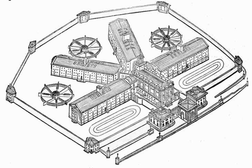In sociology, conflict theory states that society or an organization functions so that each individual participant and its groups struggle to maximize their benefits, which inevitably contributes to social change such as political changes and revolutions. Deviant behaviors are actions that do not go along with social institutions. The institution's ability to change norms, wealth, or status comes into conflict with the individual. The legal rights of poor folks might be ignored, while the middle class sides with the elites rather than the poor, thinking they might rise to the top by supporting the status quo. Conflict theory is based upon the view that the fundamental causes of crime are the social and economic forces operating within society; however, it explains white-collar crime less well. This theory also states that the powerful define crime, and that laws are instruments of oppression — tough on the powerless and less tough on the powerful.